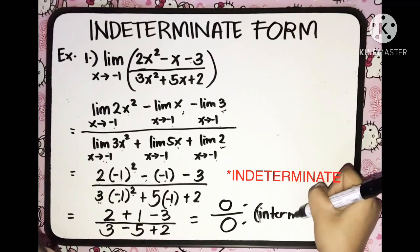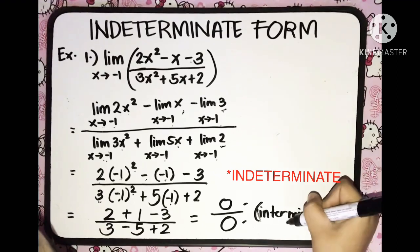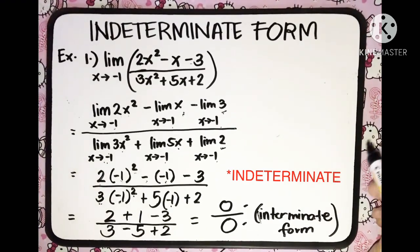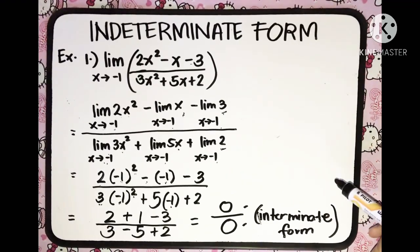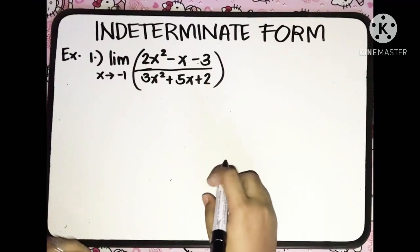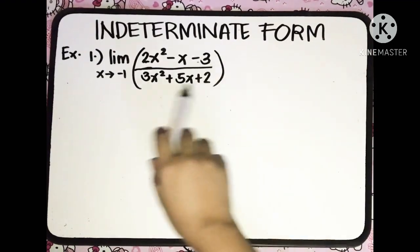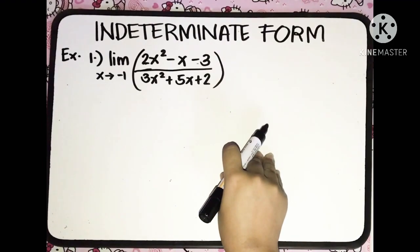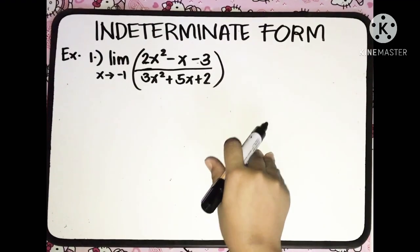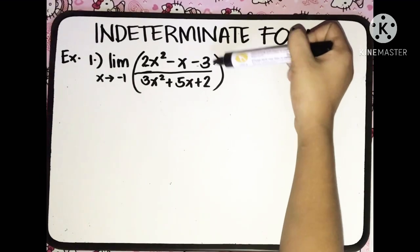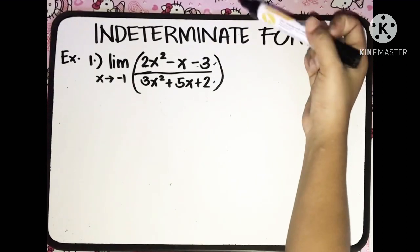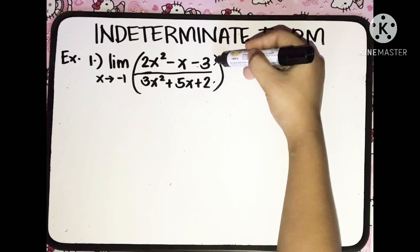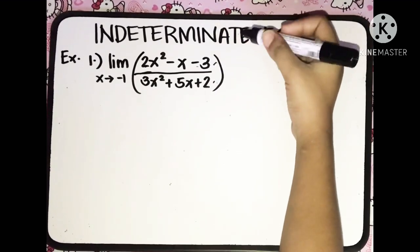If you get an answer like this, meaning you need to find another way to solve the limit of the given function. Earlier we tried finding the limit and it didn't work — we got an indeterminate form. Since the numerator and denominator are both trinomials, we're going to try to find the factors of this given function.